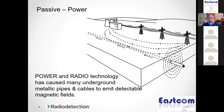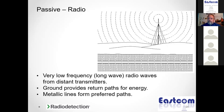Another item commonly in the ground that will carry 60 Hz is a water service, if it's used as the ground for the electric system in that house or building. That copper or galvanized pipe is going to carry 60 Hz out to the water main. So there are a lot of things underground that carry 60 Hz other than electric cables.